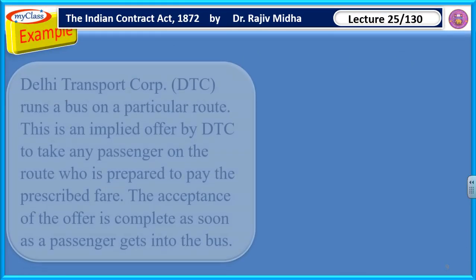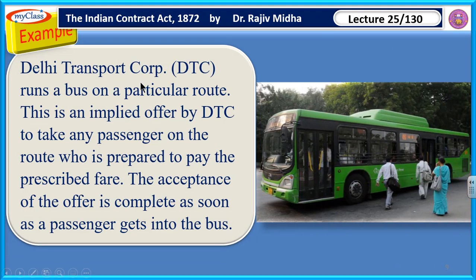Let's take up an example. DTC Corporation — Delhi Transport Corporation — runs a bus on a particular route. This is an implied offer by DTC to take any passenger on the route who is prepared to pay the prescribed fare. The offer was not made verbally or in writing, but DTC running a bus on a particular route is an implied offer. The circumstances show that DTC is willing to carry any passenger who wants to pay the prescribed fare. The acceptance of the offer is complete as soon as a passenger gets into the bus.